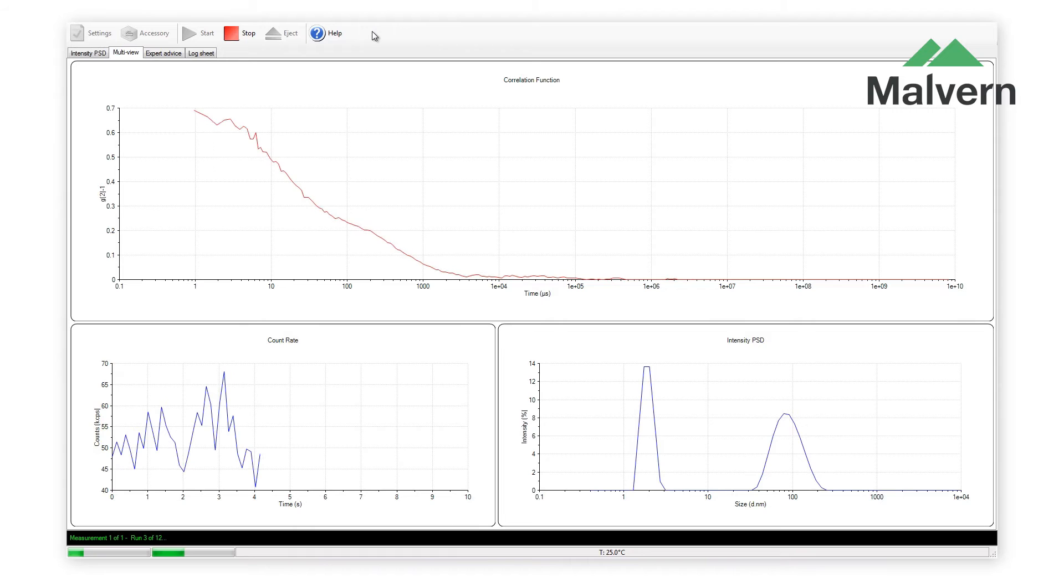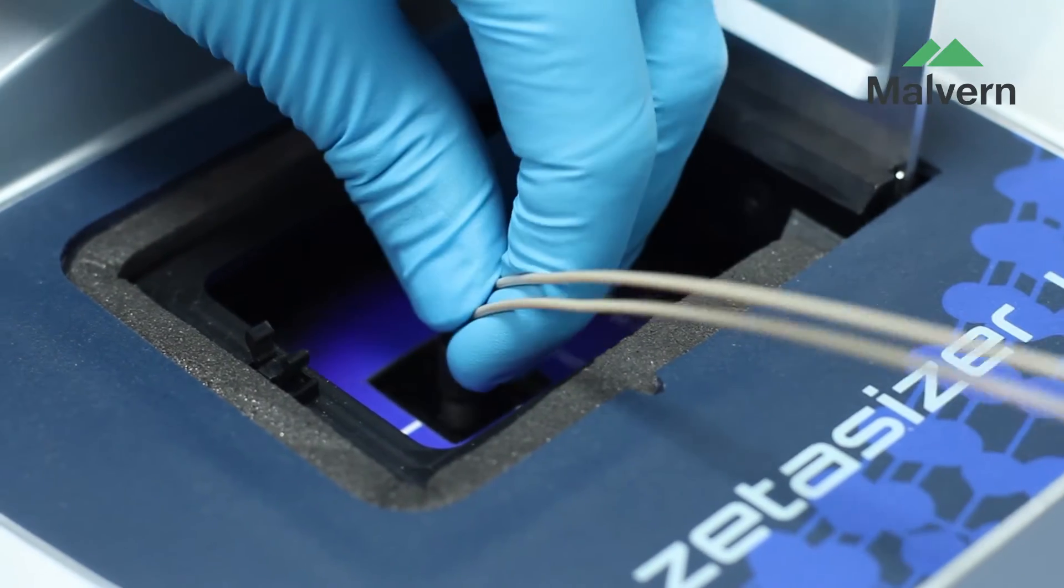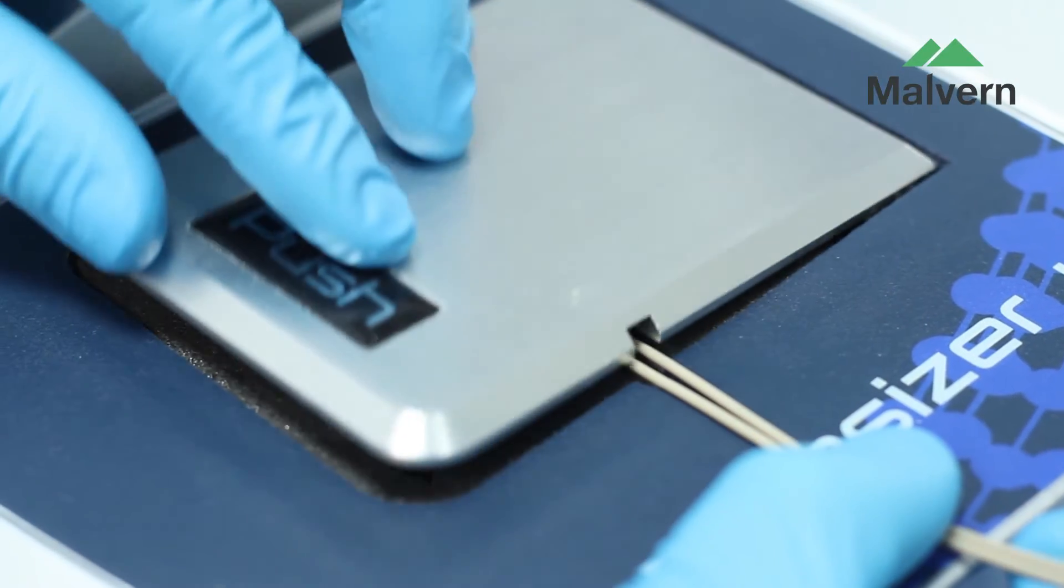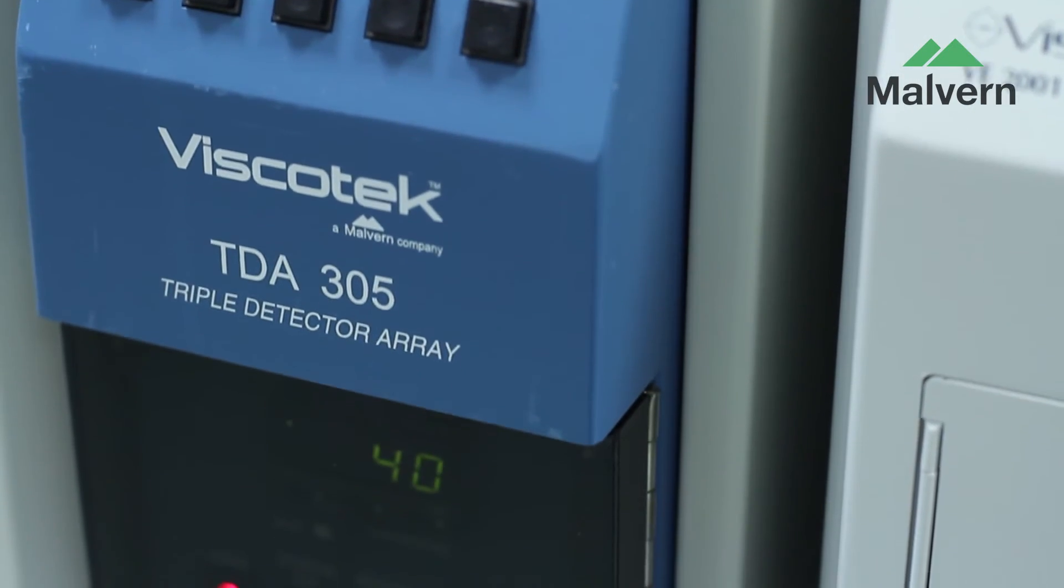The built-in protein calculators maximize the information that is extracted from the data. When attached to your SEC system, the Zetasizer Micro V is a sophisticated and powerful light-scattering detector, generating high-quality light-scattering chromatograms.